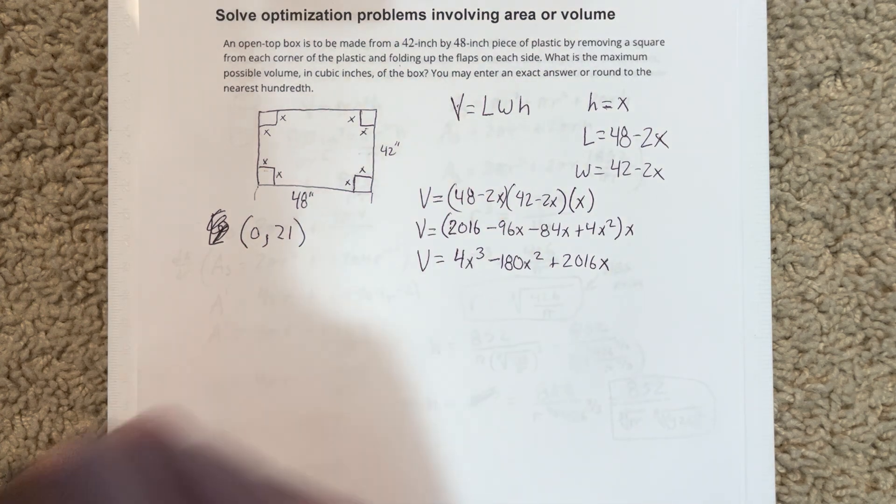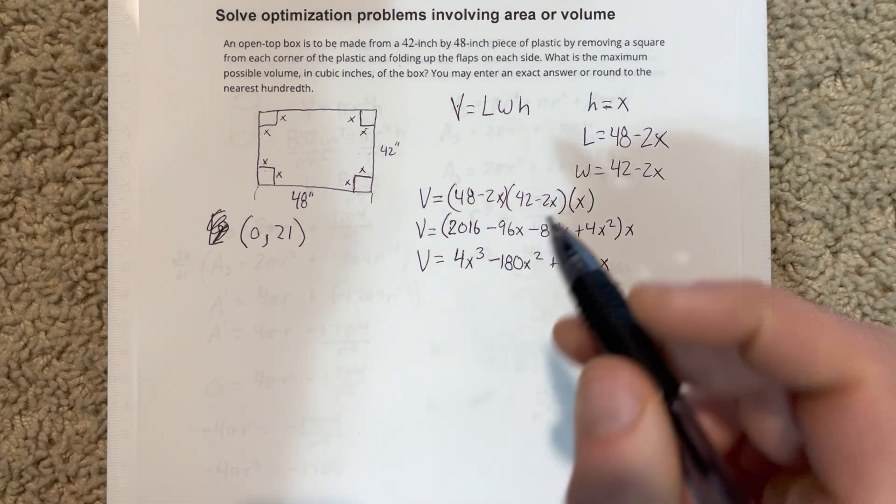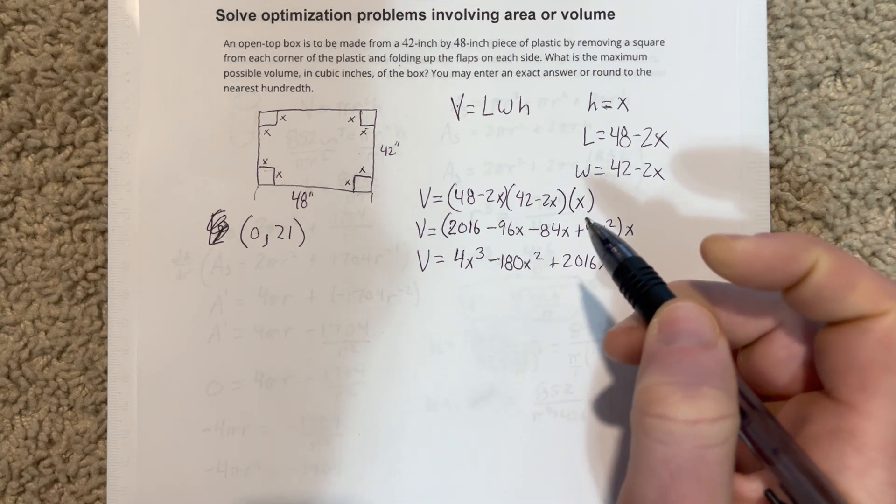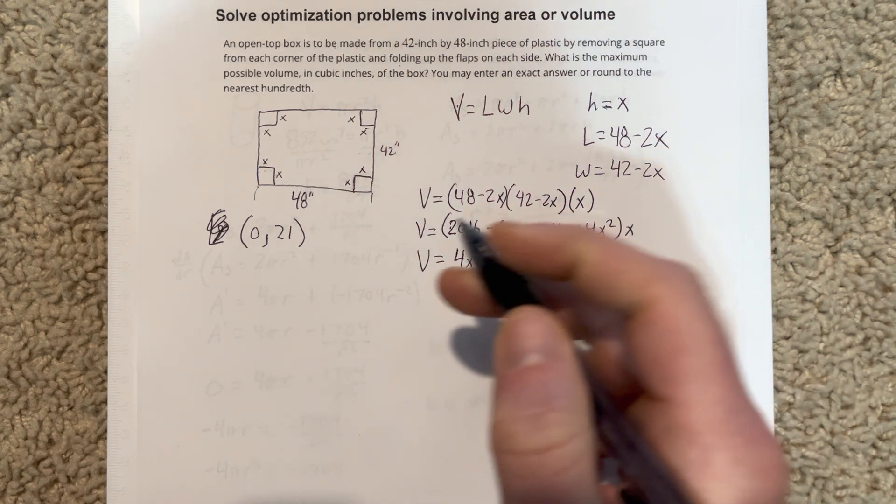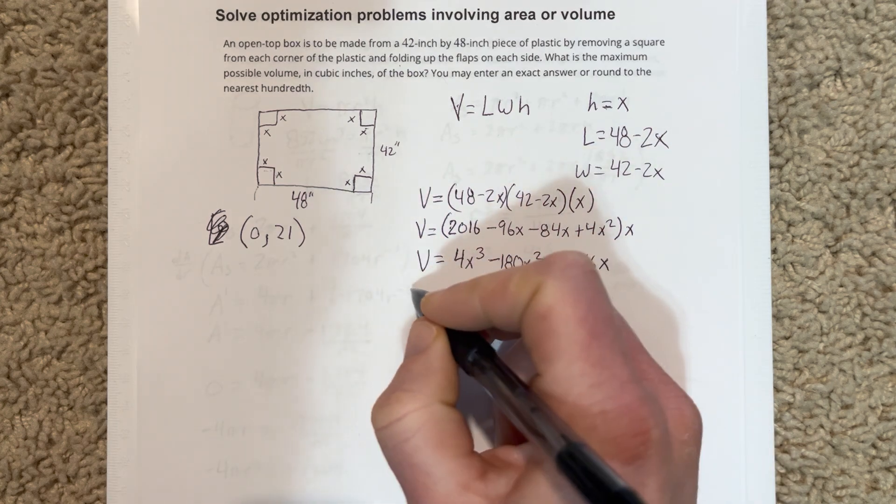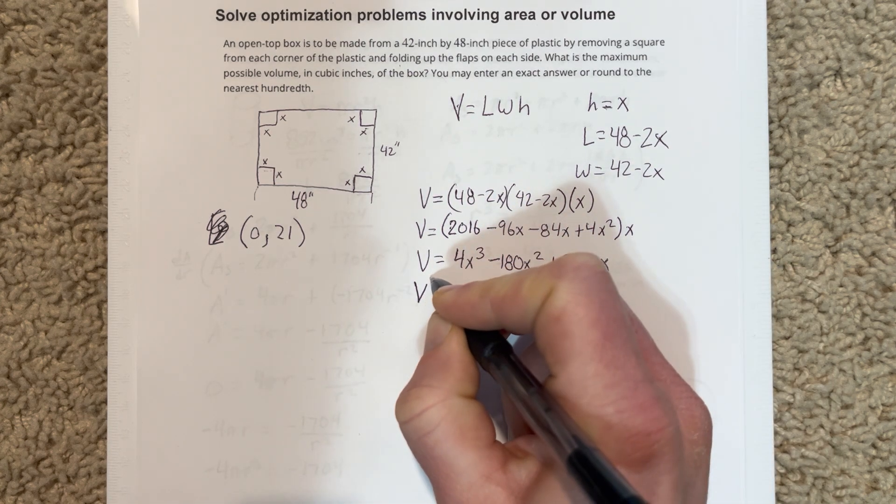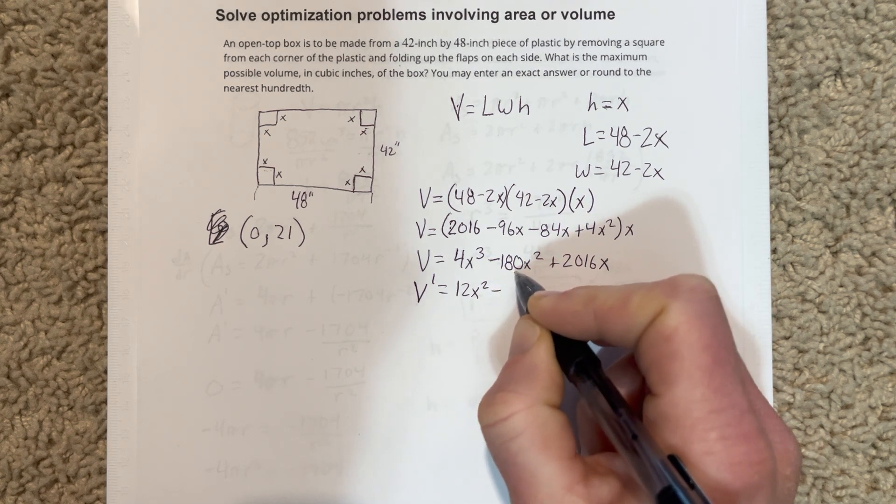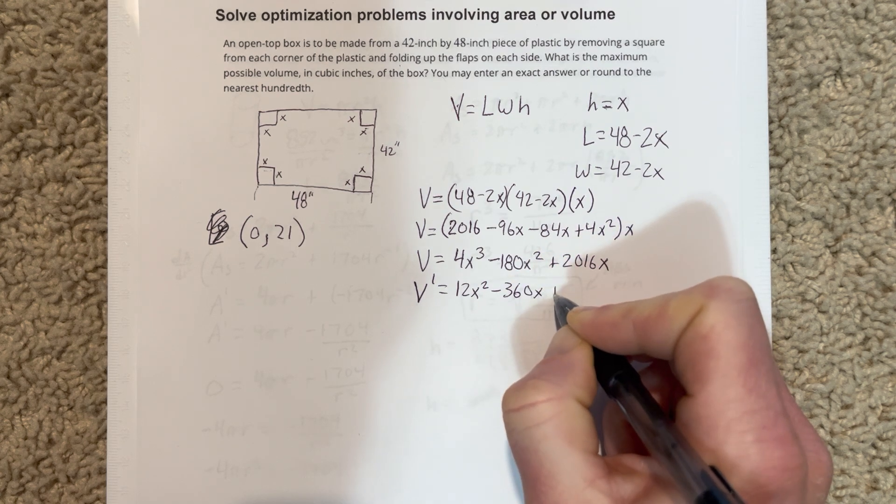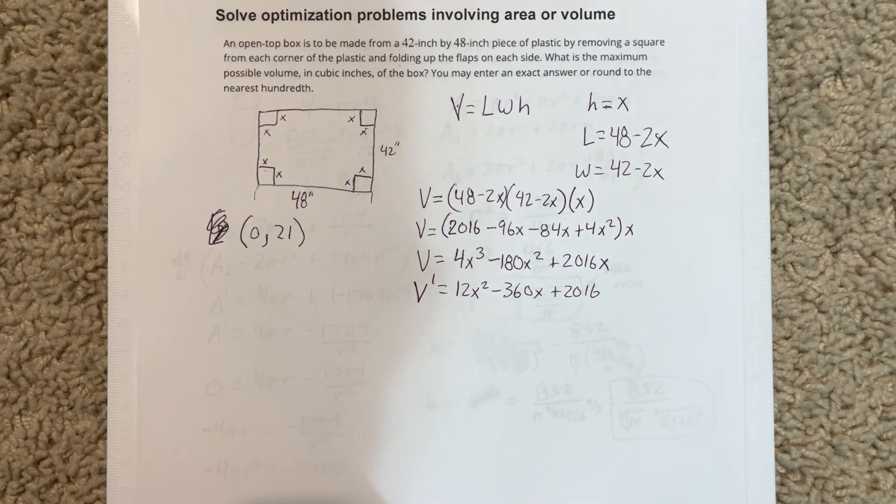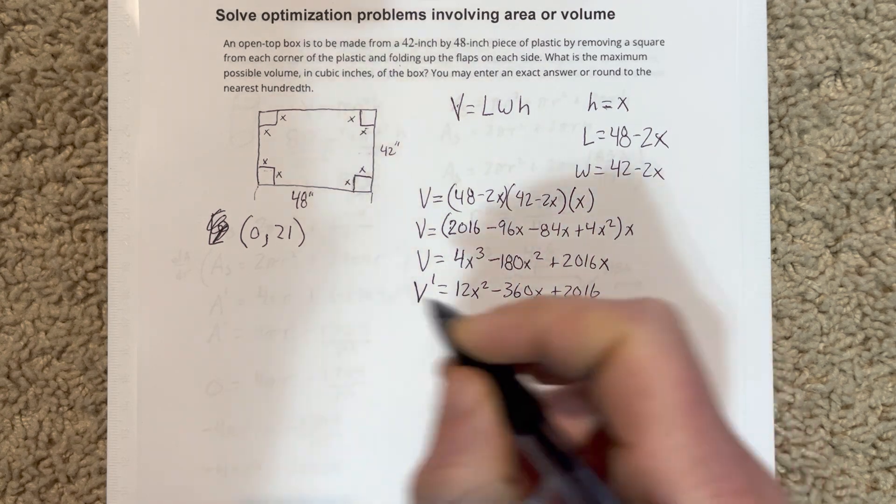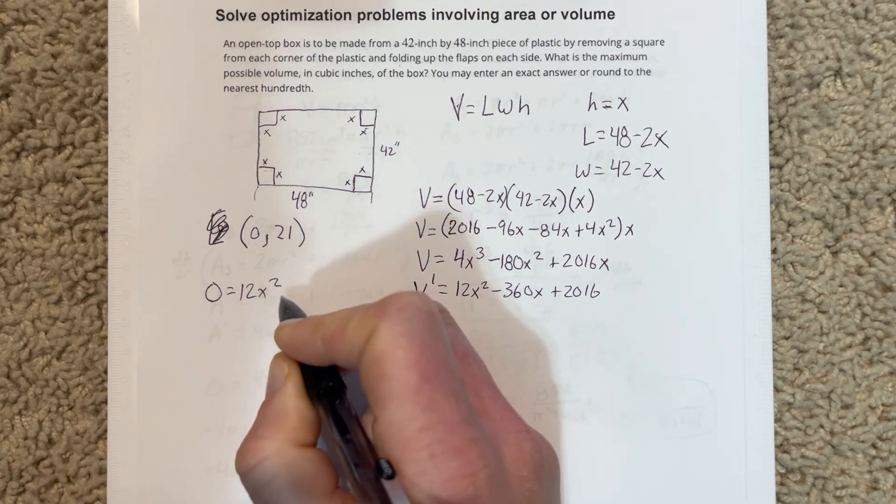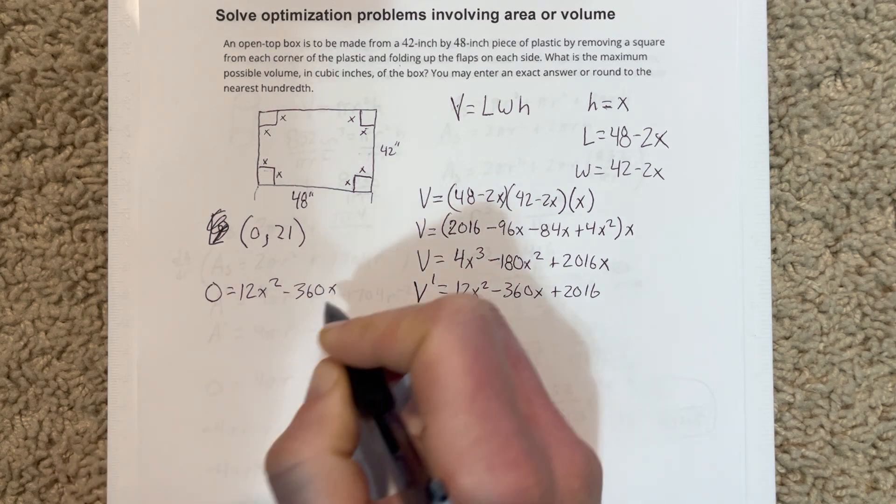So now we're bounded and we have this equation for volume. So what we're going to do is we're going to set that equal to zero and we're going to solve that thing. Well, derivative first. So we're going to take V prime, which is equal to 12X squared minus 360X plus 2016. So now that we've taken the derivative, then we're going to set it equal to zero. So we're going to have 12X squared minus 360X plus 2016.